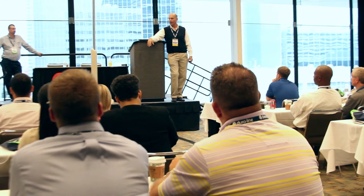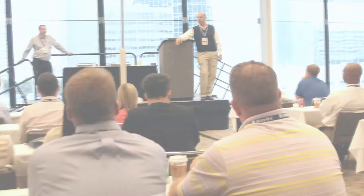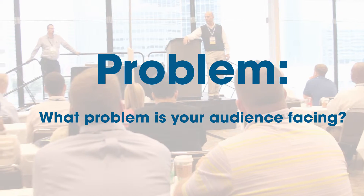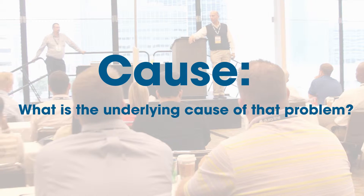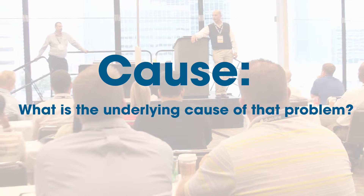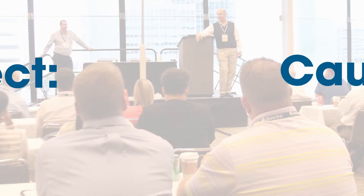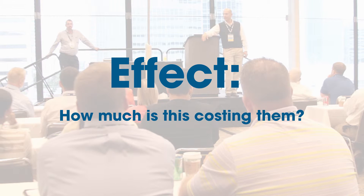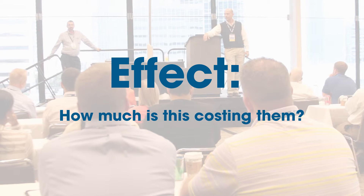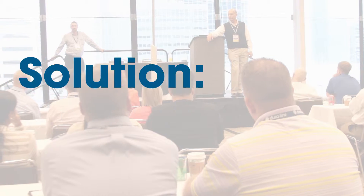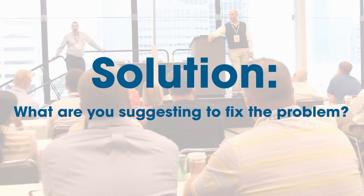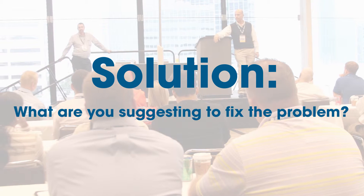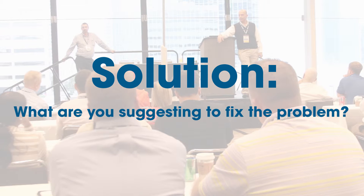The structure could be something like this. Problem: what problem is your audience facing? Cause: what is the underlying cause of the problem? Effect: how much time, money, and frustration is the problem causing? And finally, what are the suggestions you recommend to fix the problem and how are they going to do it?